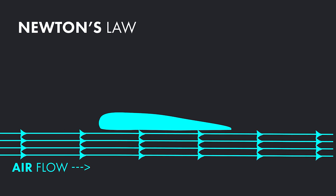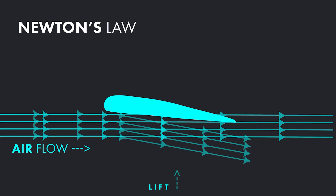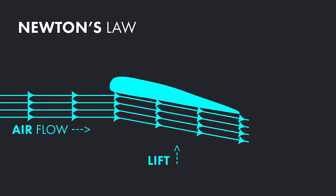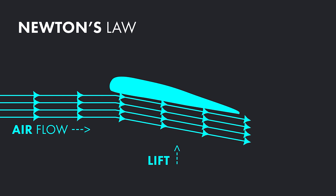Let's start with Newton. Newton's third law of motion states that every action has an equal and opposite reaction. Let's visualize this. Air has mass. While moving forward, an airfoil will push the air underneath it down; the air in turn will push upward, resulting in an equal and opposite reaction. With the proper angle of attack and forward momentum of the wing, the result is lift.